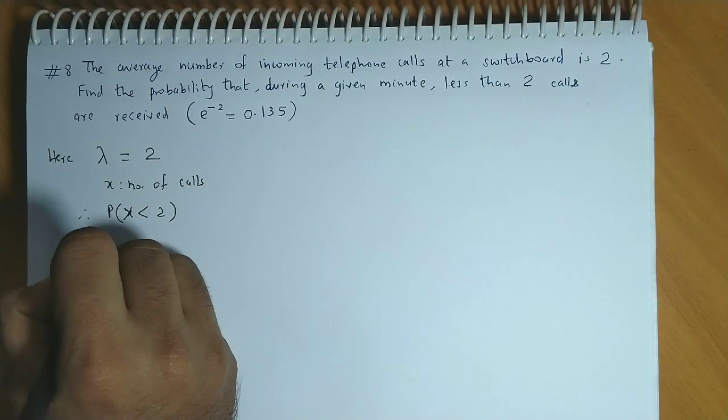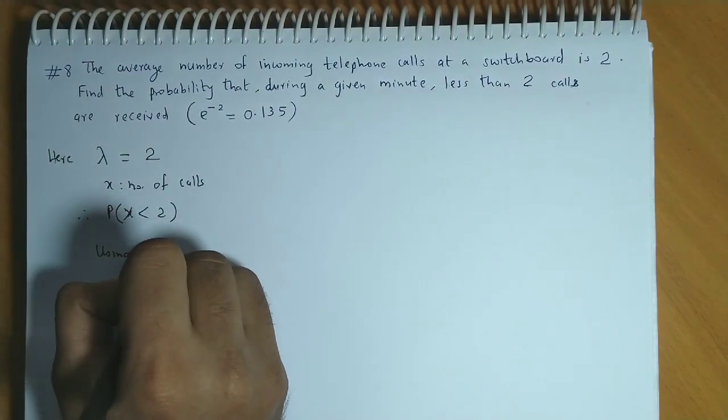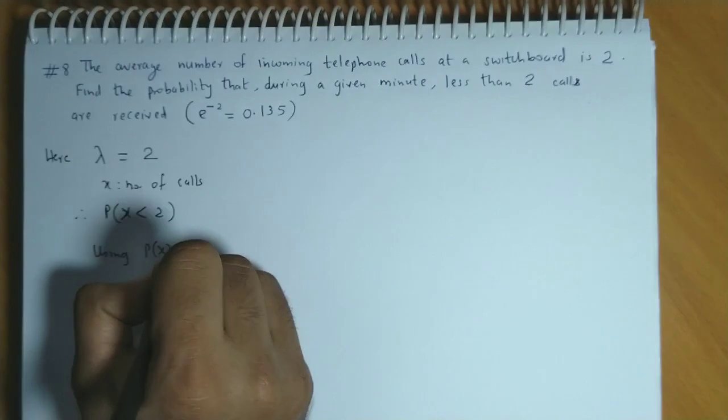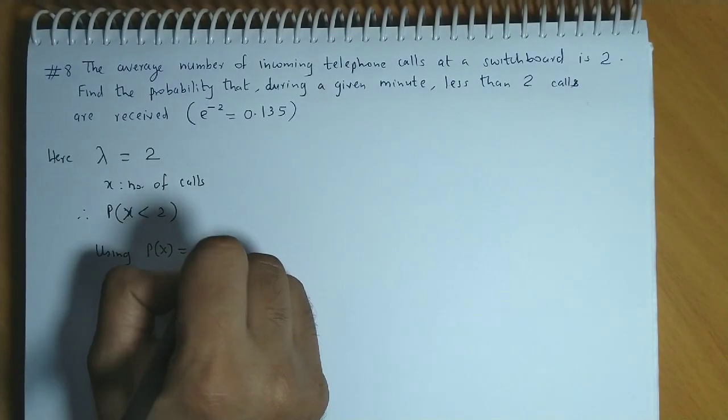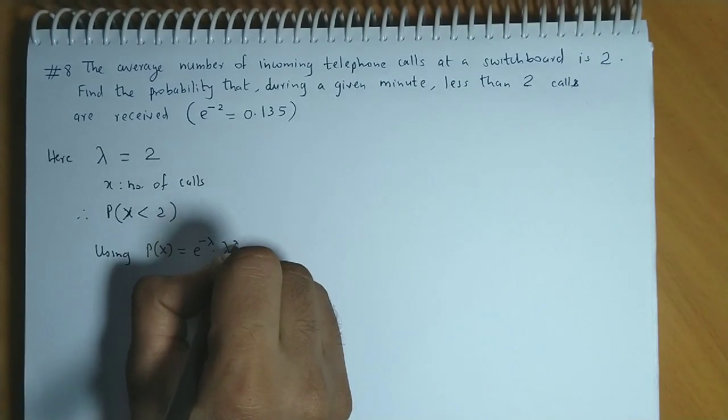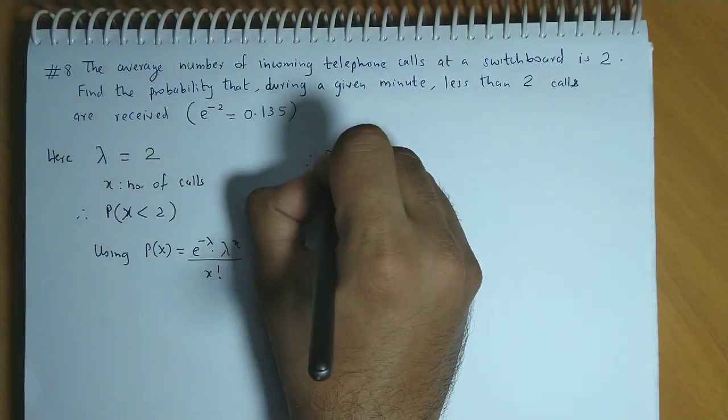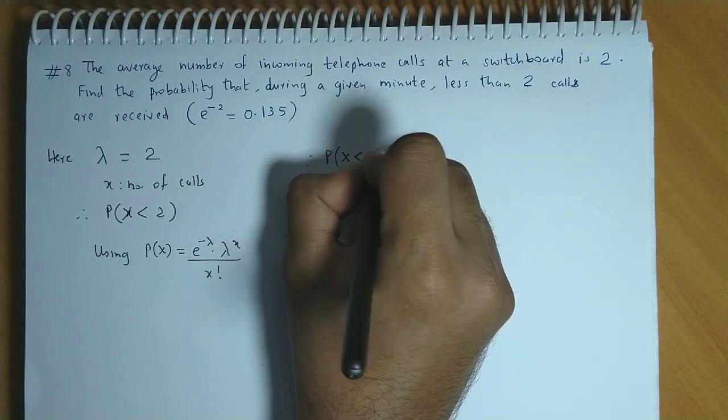Now we know that for a Poisson distribution, probability of x is given by e raised to minus lambda, lambda raised to x upon x factorial. Now we have to find probability of x less than 2.